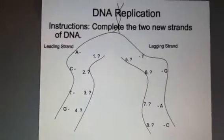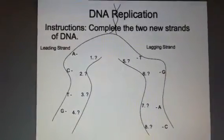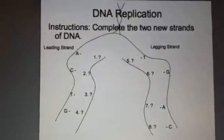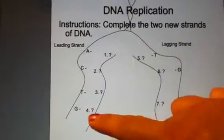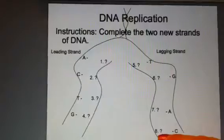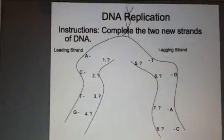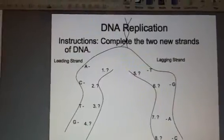Moving to slide 21, now it's your turn to see if you can complete the two new strands of DNA. Try to fill in 1-4 and 5-8 using the base pairing rules of A with T and C with G. Try it now.